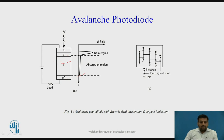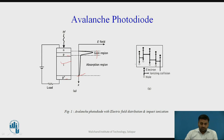Avalanche photodiodes are always operated under reverse bias. This reverse bias creates a high electric field near the junction between the n layer and the p layer, which decreases toward the p-plus layer. When a photon with energy higher than the bandgap energy is incident on the n layer, a single electron-hole pair is generated. This electron-hole pair acquires sufficient kinetic energy due to the high electric field and collides with bound electrons in the valence band, creating a secondary electron-hole pair — this is the impact ionization process.